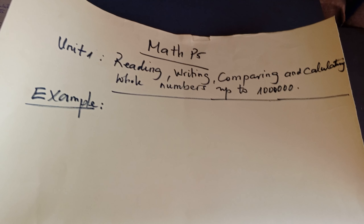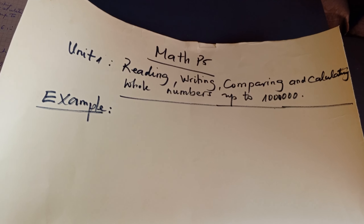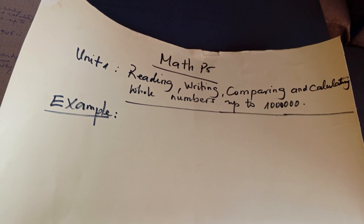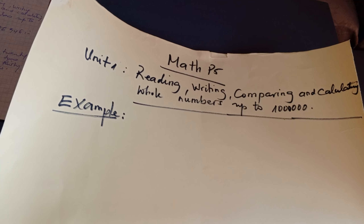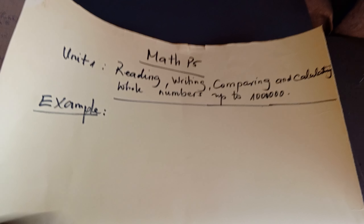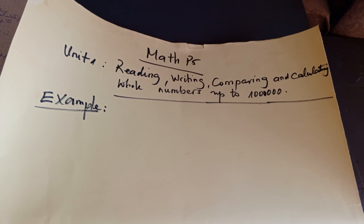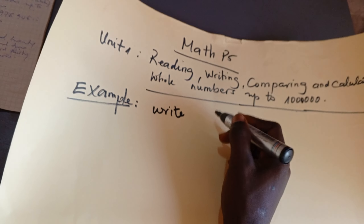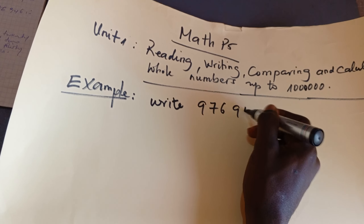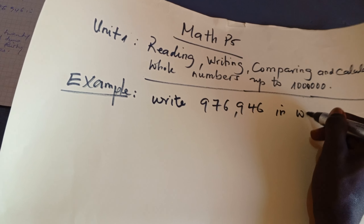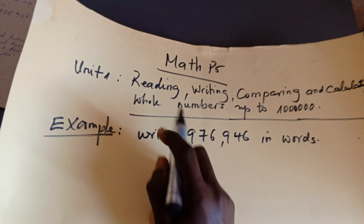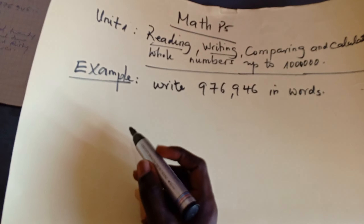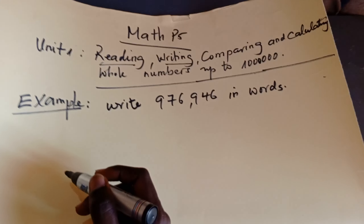Here we have Unit Number One, which is called reading, writing, comparing, and calculating whole numbers up to one million. For P6 they go above one million. We have an example here. We want you to focus on reading and writing only; comparing will be done in the next videos.